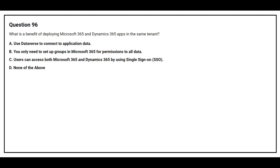Question number 96: What is a benefit of deploying Microsoft 365 and Dynamics 365 apps in the same tenant? Option A: use Dataverse to connect to application data. Option B: you only need to set up groups in Microsoft 365 for permissions to all data. Option C: users can access both Microsoft 365 and Dynamics 365 by using single sign-on (SSO). Option D: none of the above. The correct answer is option A, use Dataverse to connect to application data.